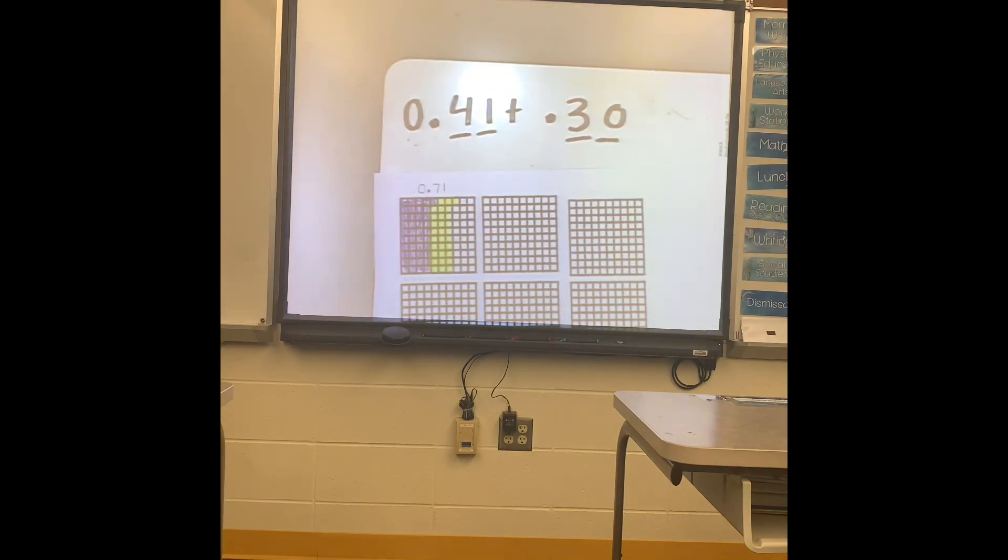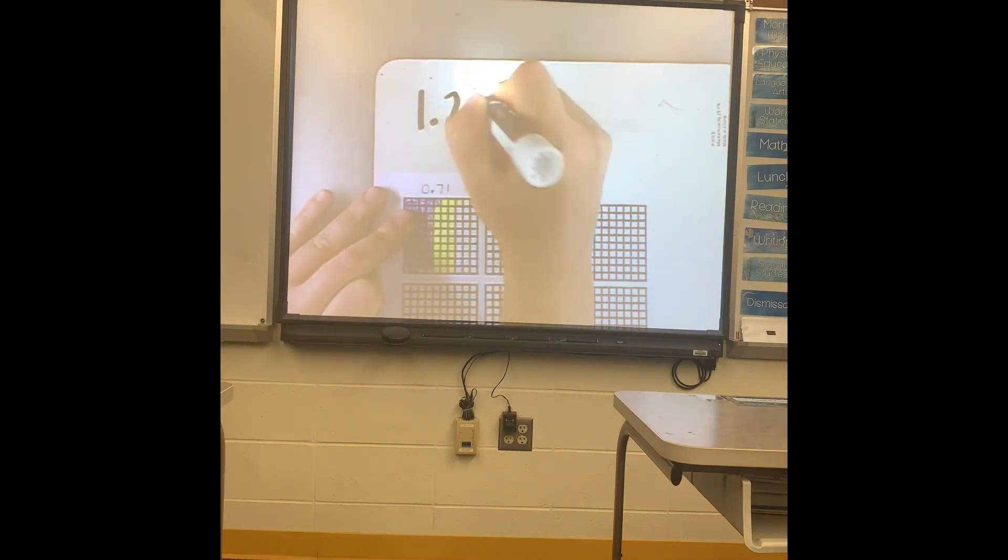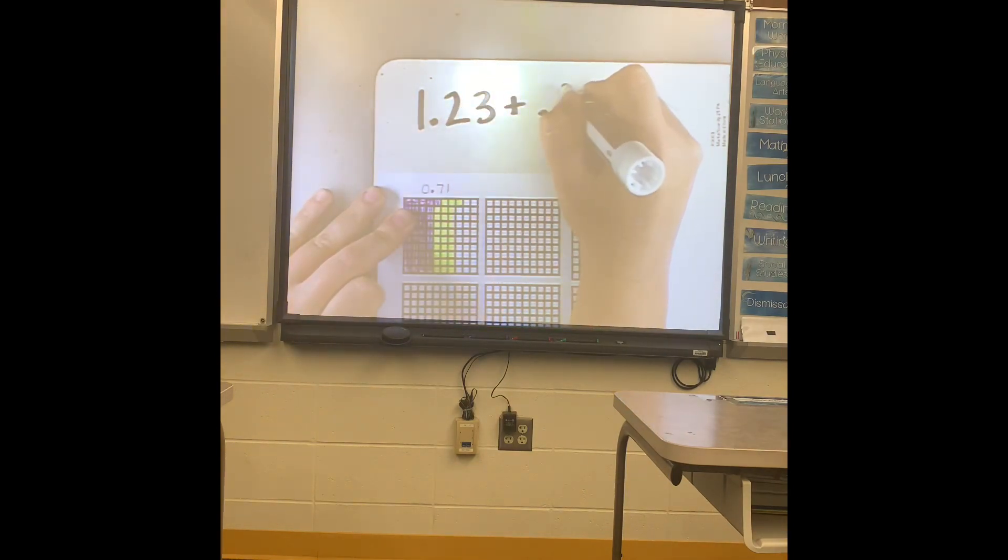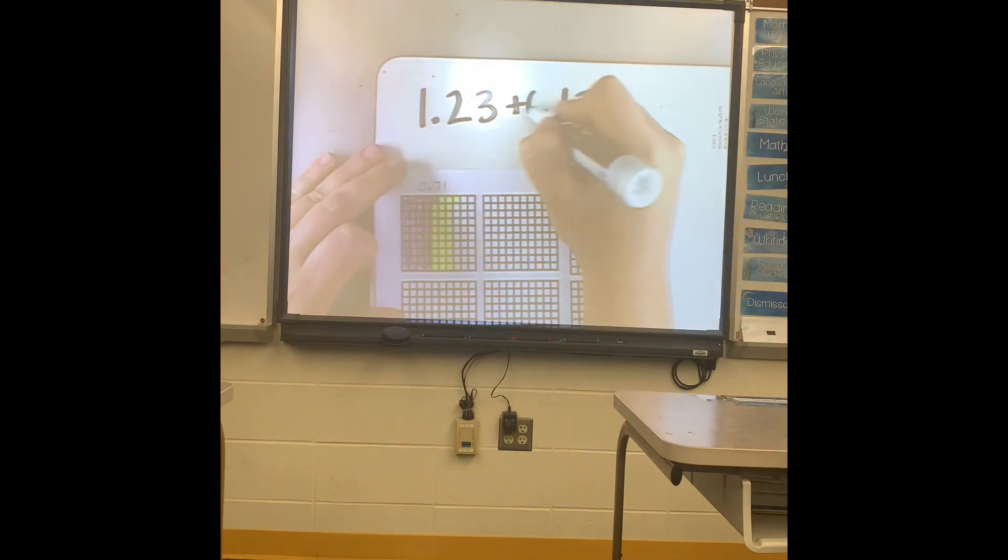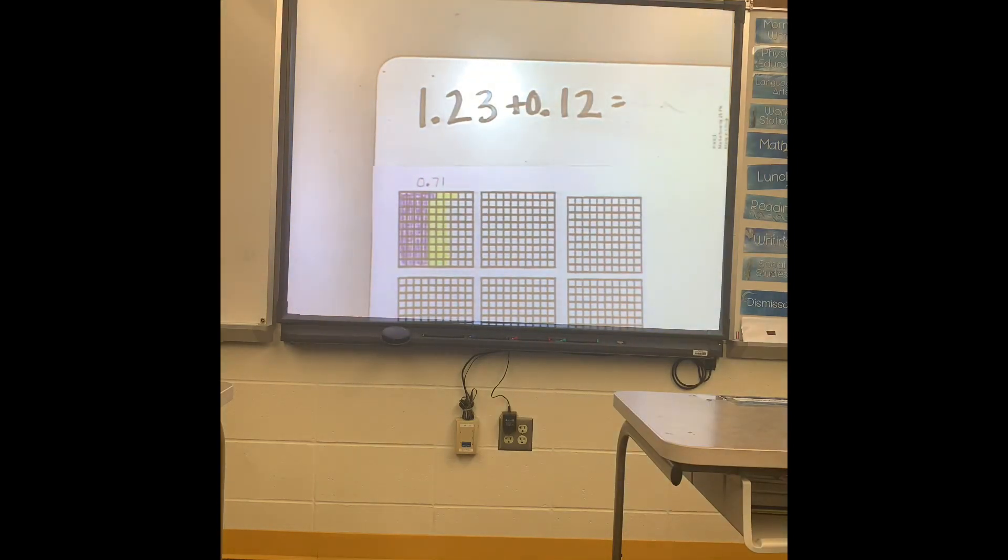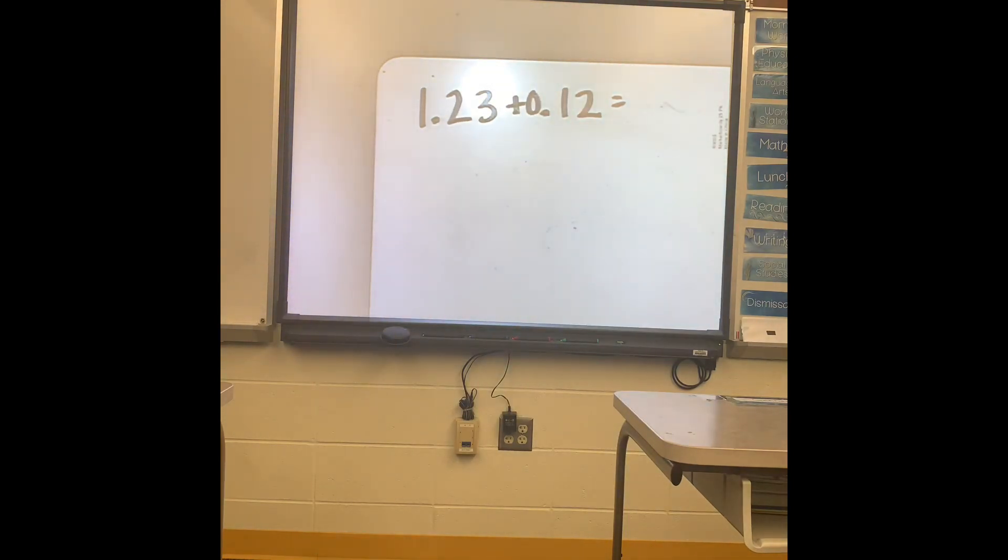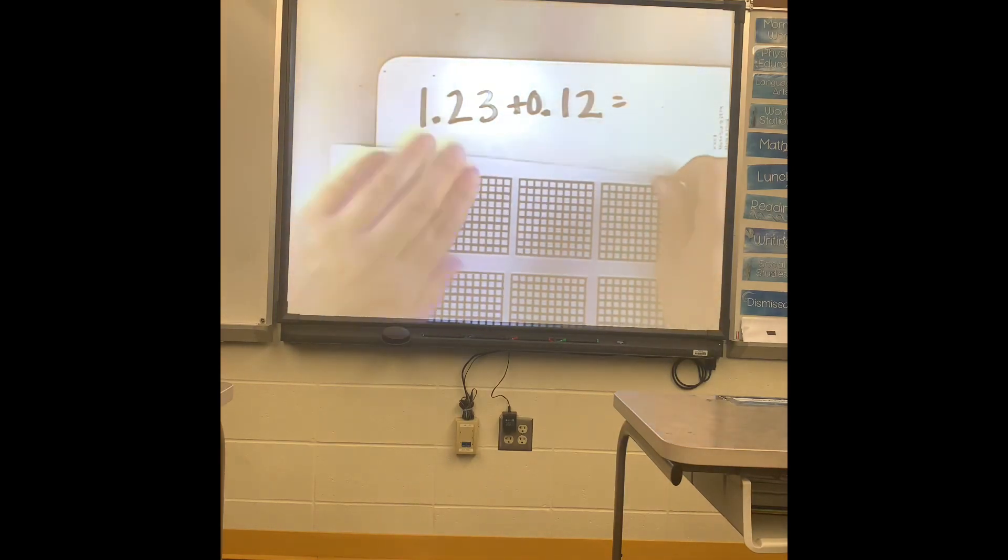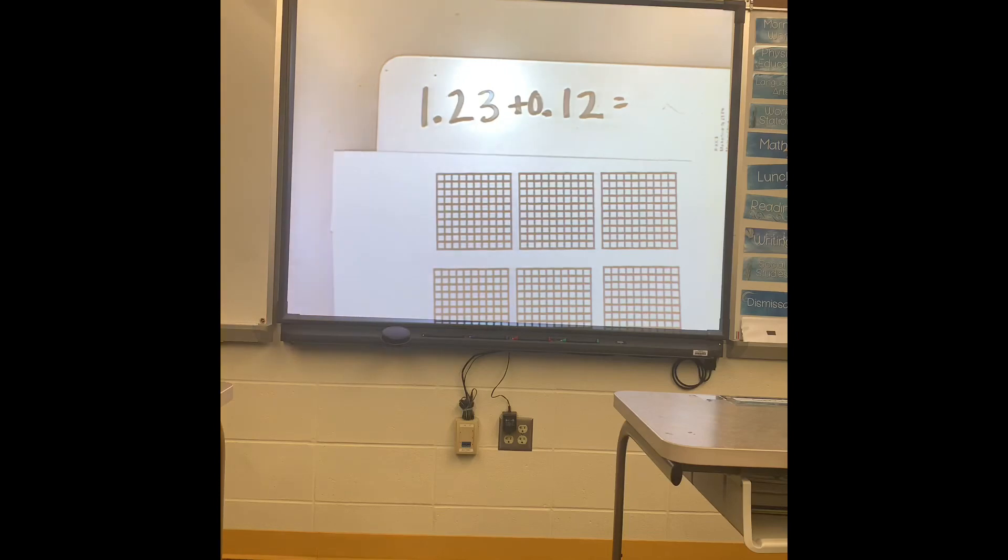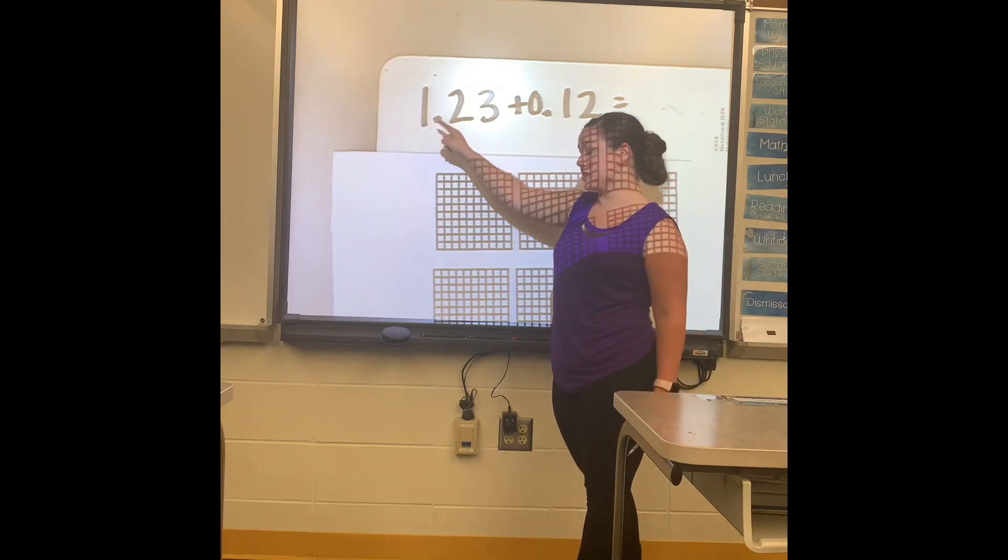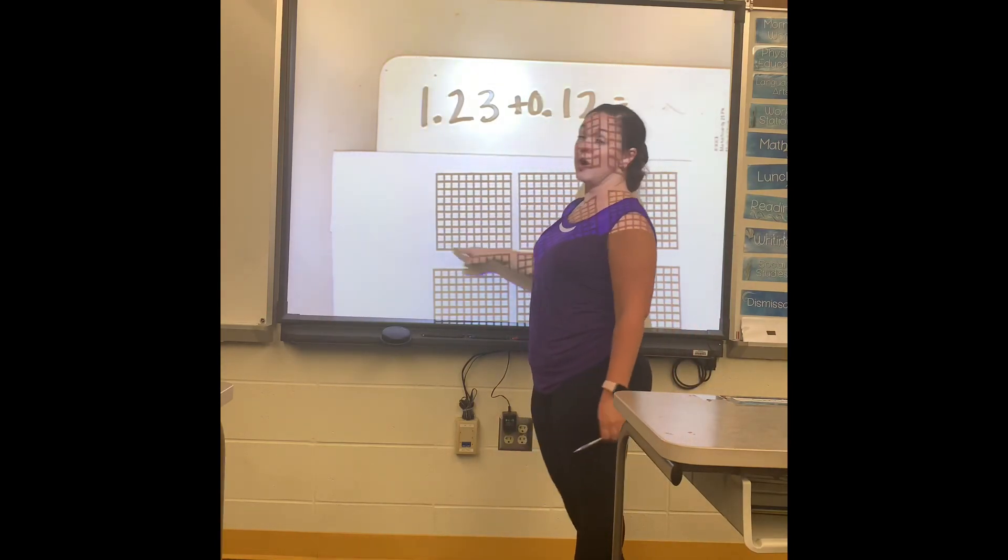What makes it trickier is if you do have a whole number. So if you had 1.23 plus, I'm just going to say 0.12, I'll make it easy for myself. I'm going to turn this paper around just so I don't get anybody confused watching at home. What that one represents is—I like to think money—this means you have one full dollar or you have a hundred pennies, which means you need to shade in one full grid.